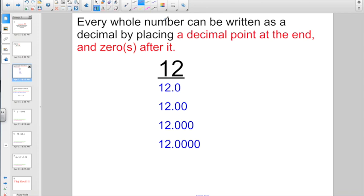Every whole number, whether it's a money problem or not, can be written as a decimal by placing a decimal point at the end and zeros after it. If you had the whole number 12, you can write it 12.0 or 12.00 or 12.000. Nothing is the same as zeros.